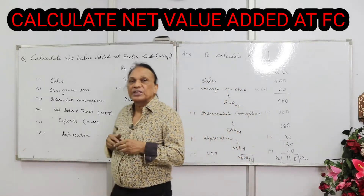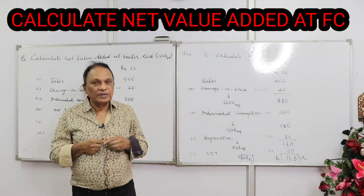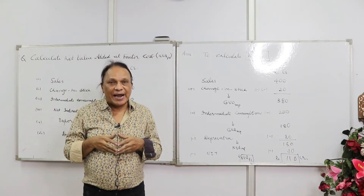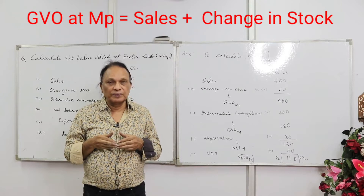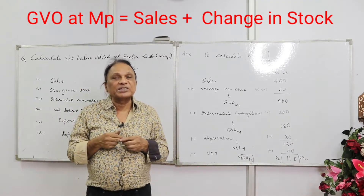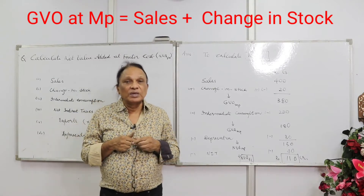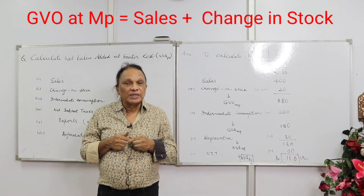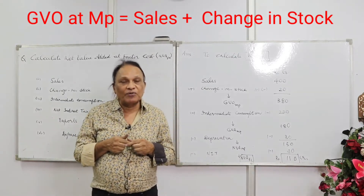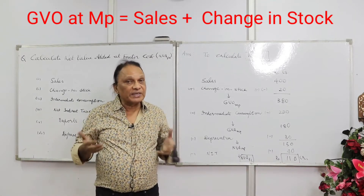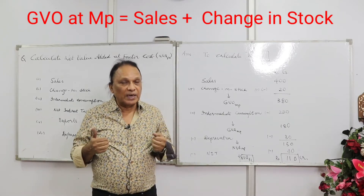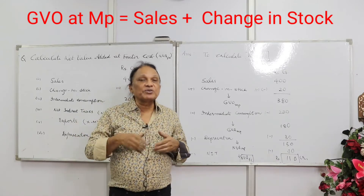The formula they give you: to sales you always add change in stock, and you get gross value of output. Sales plus change in stock will give you gross value of output — GVO. Gross value of output you always get at market price.